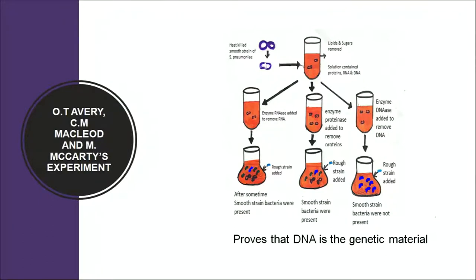As seen in the flask, the rough strain transformed into the smooth strain. In the third set, enzyme DNase was added to digest the DNA, leaving only proteins and RNA. When this solution was added to the flask containing rough bacteria, the rough bacteria did not change to the smooth type — they remained rough strain. This proves beyond doubt that DNA is the genetic material.